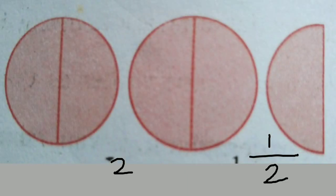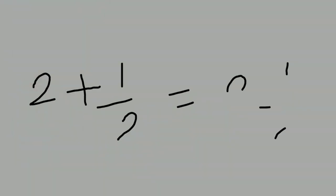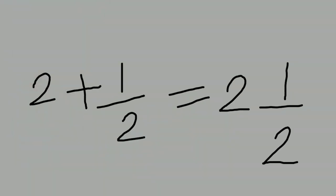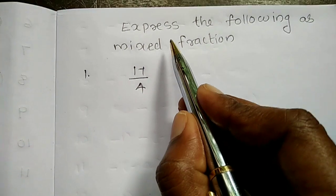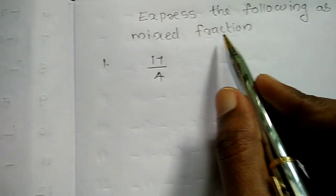For example, if we have two complete circles and a half circle, that is 2 plus 1/2, the mixed fraction is written as 2 and 1/2.